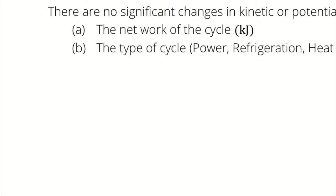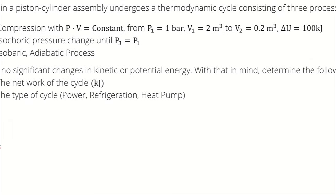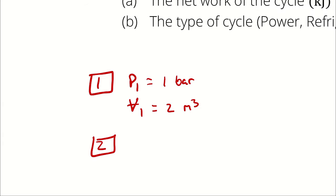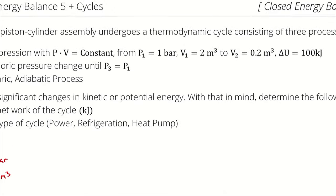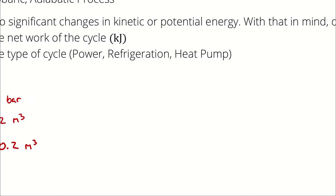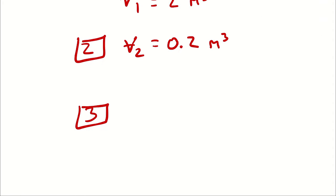I will start by populating what I know. At state 1, I know a pressure and a volume: 1 bar and 2 cubic meters. At state 2, I know the volume is 0.2. At state 3, I know the pressure is the same as state 1, and pressure times volume equals that of state 1.